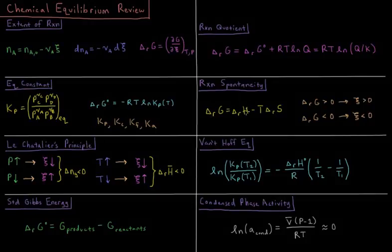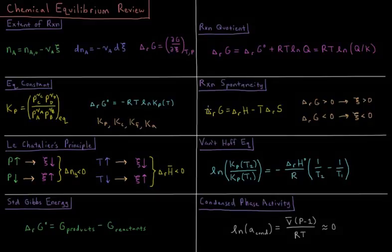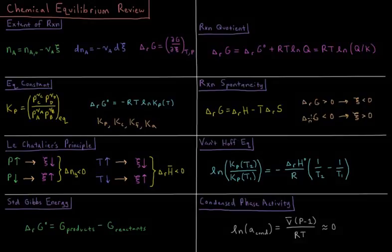Since the Gibbs energy of reaction equals the enthalpy of reaction minus T times the entropy of reaction, at various temperatures the signs of entropy and enthalpy determine whether or not the reaction is spontaneous. When the Gibbs energy of reaction is positive, it goes backwards; when it is negative, it goes forwards. That all depends on the relative signs of the enthalpy and entropy at the given temperature.